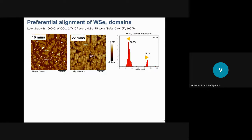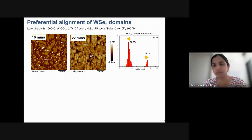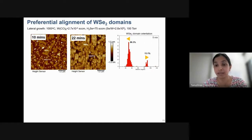Regarding the origin of large spin-orbit coupling in 2D TMDs: as far as understood, it is the transition metal's d-orbitals that cause the spin-orbit coupling to be so prominent in these materials. The transition metal itself drives the spin-orbit coupling and splits the valence band.